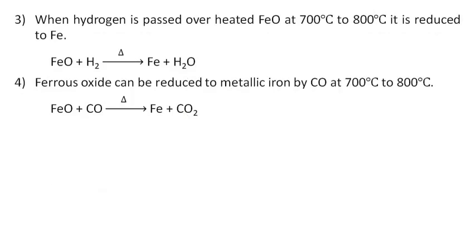When hydrogen is passed over heated ferrous oxide at 700 degrees Celsius to 800 degrees Celsius it is reduced to iron. Ferrous oxide can be reduced to metallic iron by carbon monoxide at 700 to 800 degrees Celsius.